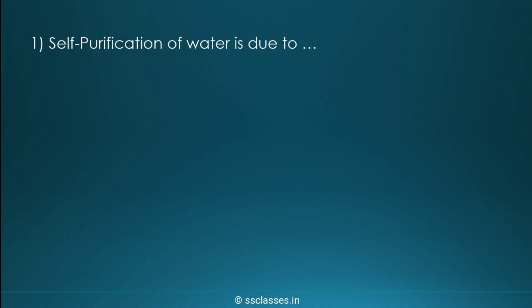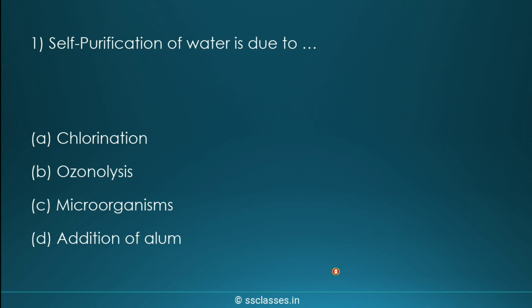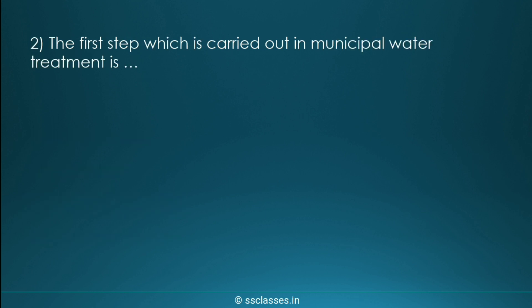First question: self-purification of water is due to which process? Options are chlorination, ozonolysis, microorganisms, or addition of alum. The correct option is microorganisms — this is responsible for the self-purification of water.